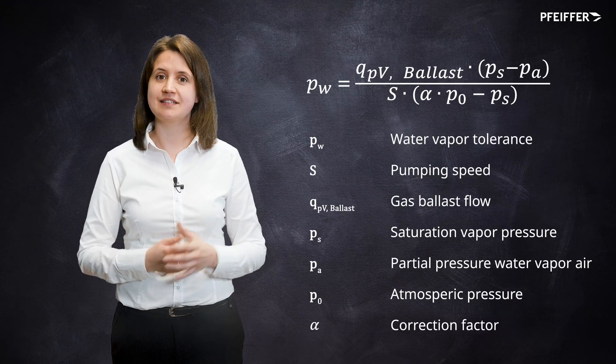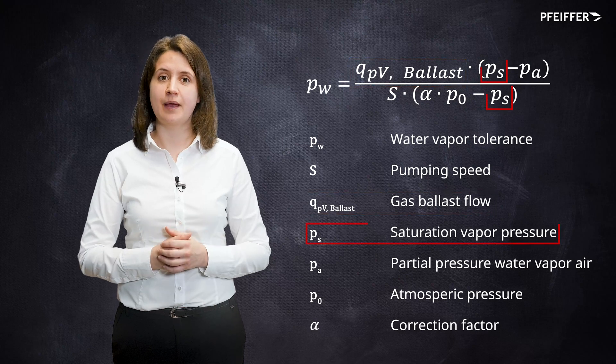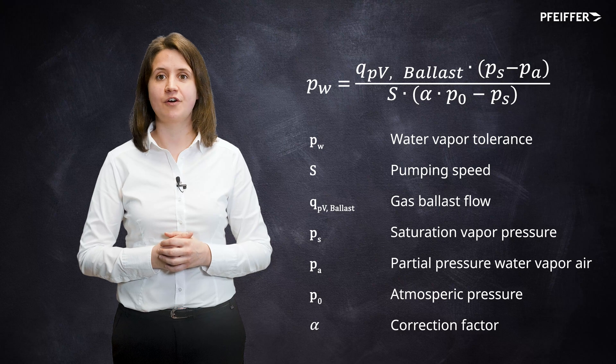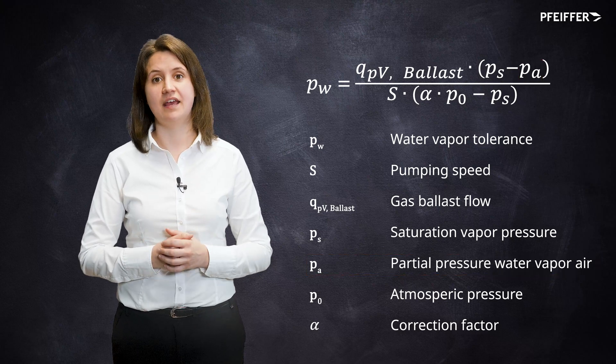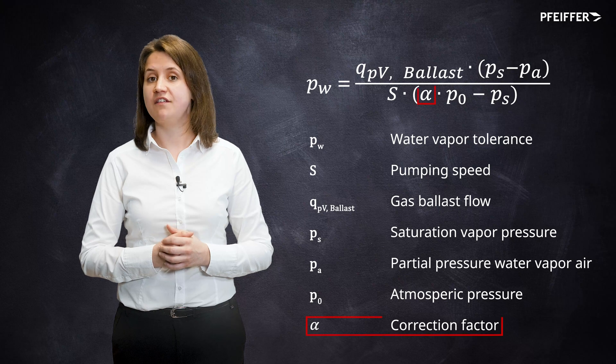For the calculation one needs pumping speed S, gas ballast flow q and saturation vapor pressure at a given temperature PS. Besides the partial pressure of water vapor PA in the air, atmospheric pressure PO and the correction factor alpha is necessary.